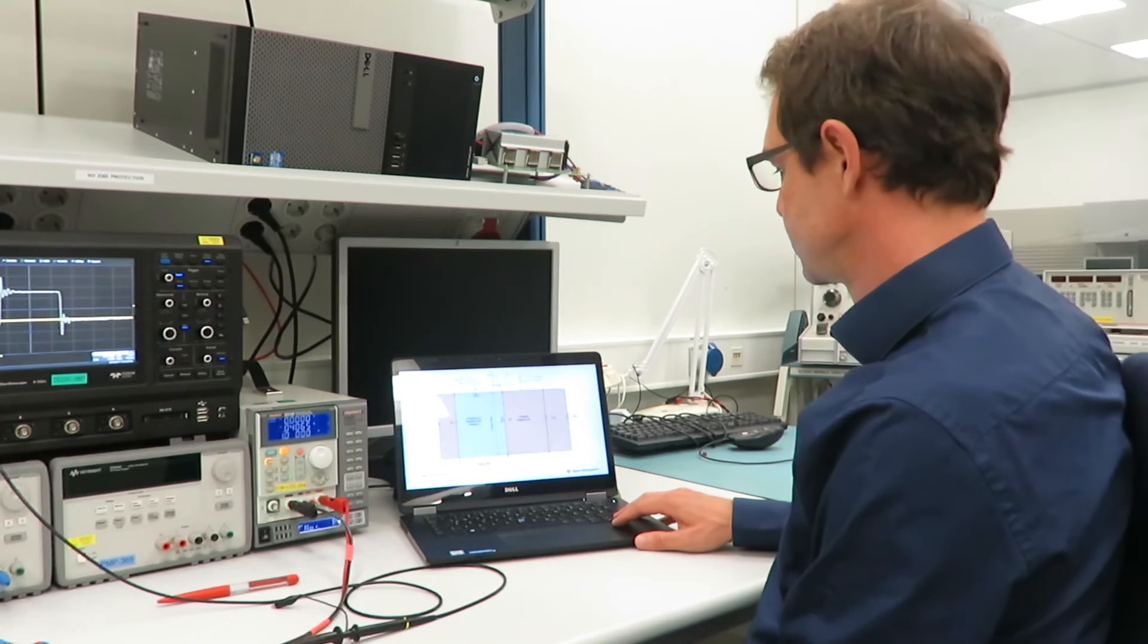After the switch node voltage measurement let's have a look at the PCB layout. Here you see the circuit of a standard step-down converter. To optimize the PCB layout we need to identify any loops with high change in current. For step-down converter the output current is continuous. Therefore those loops are uncritical.